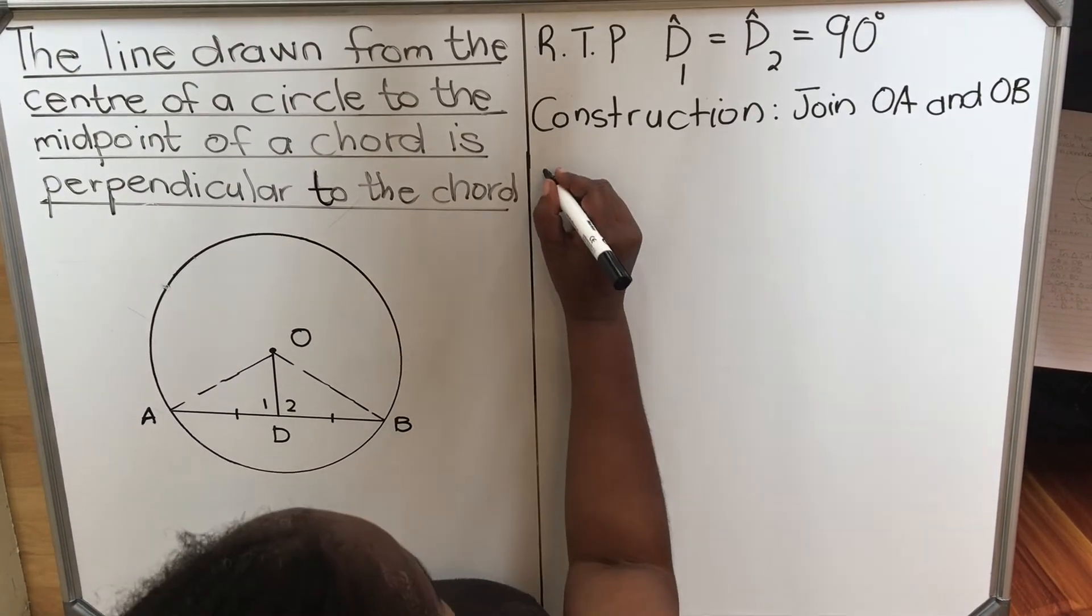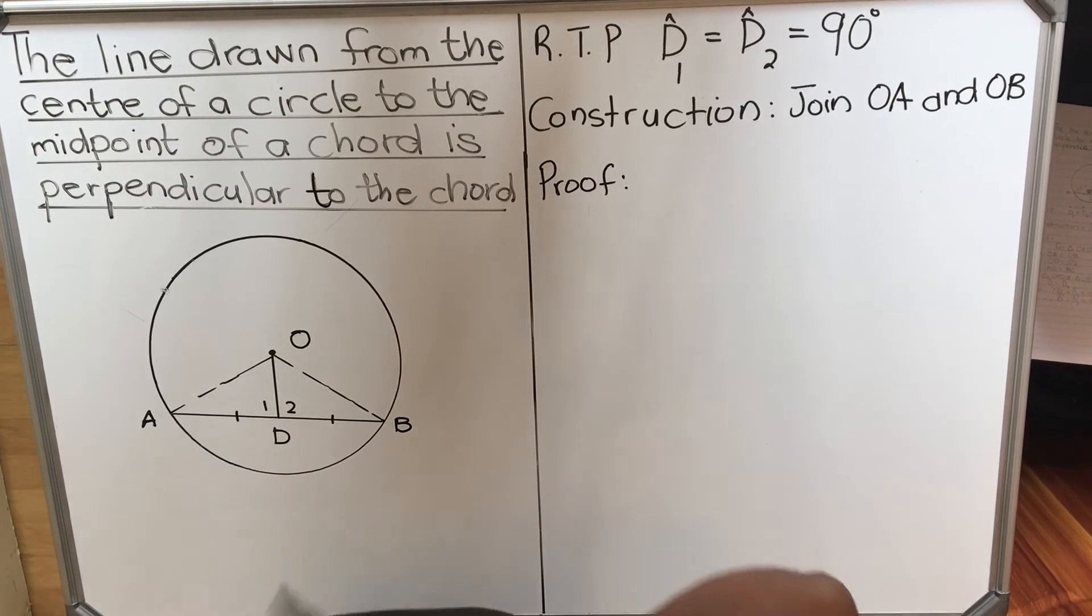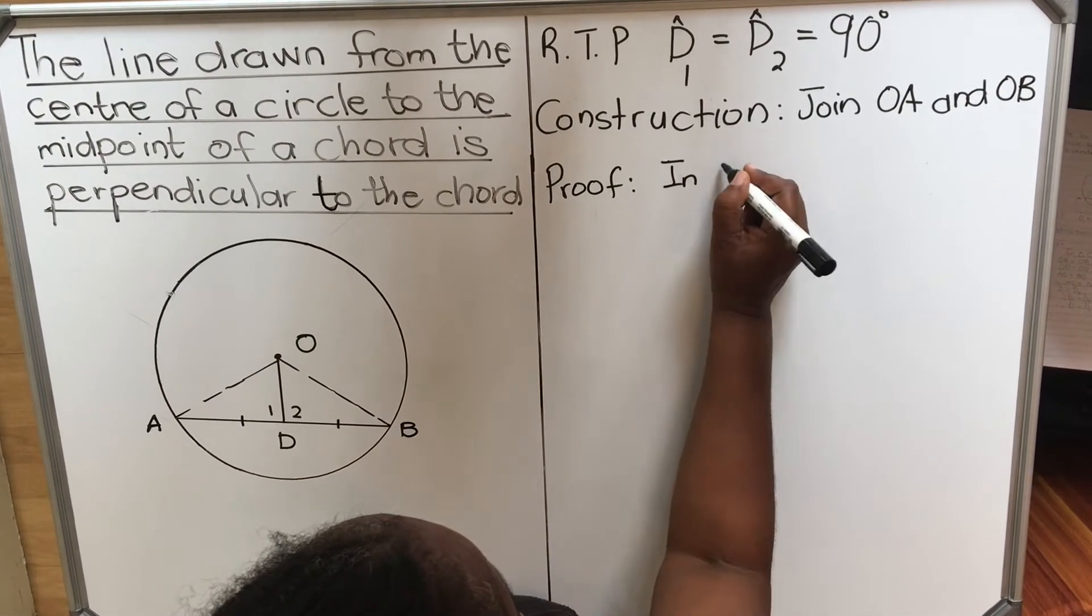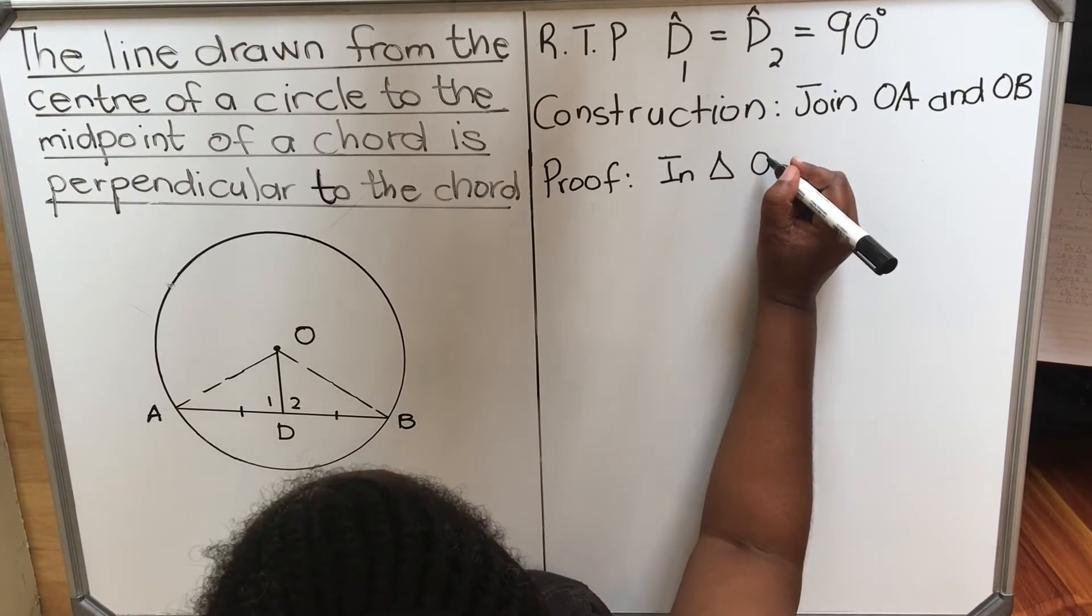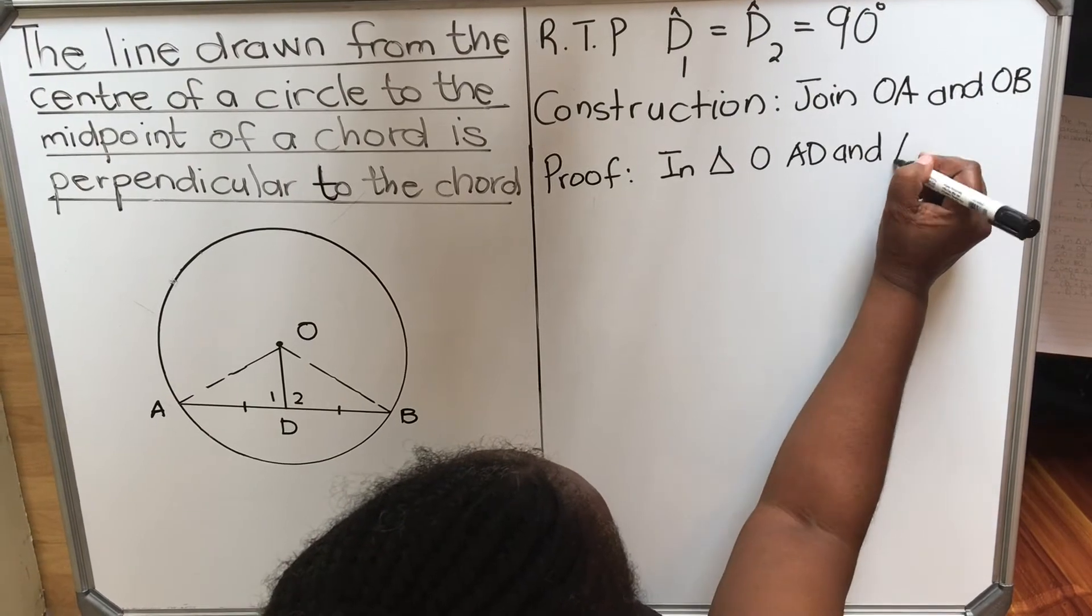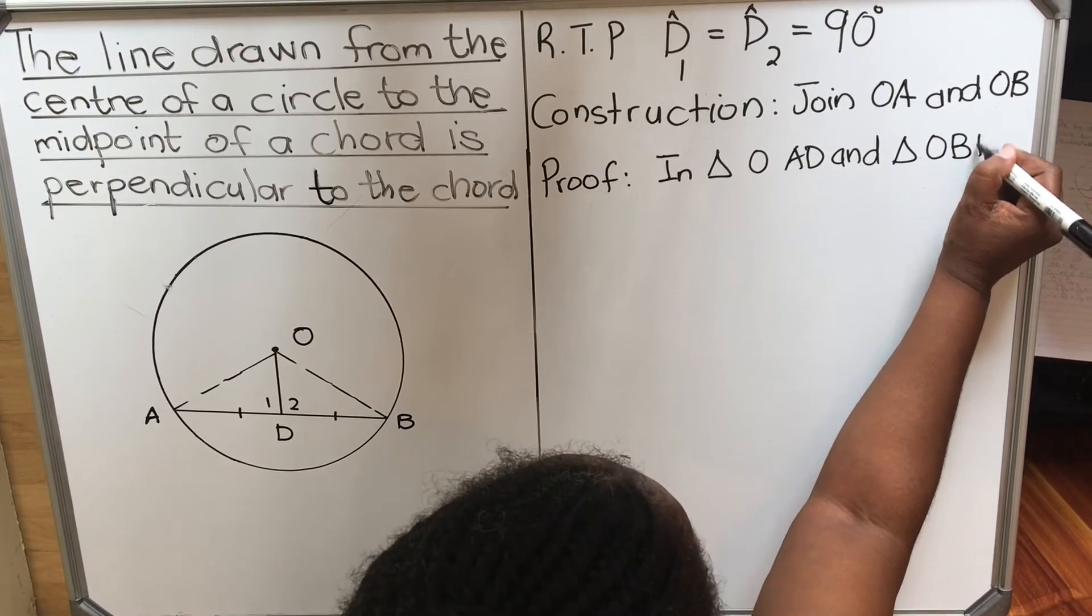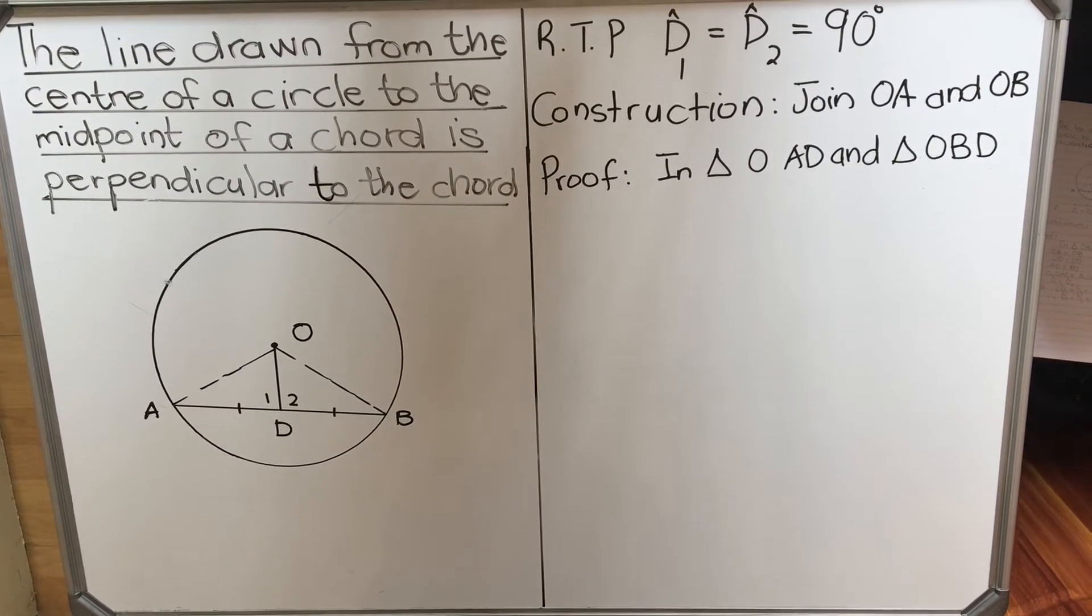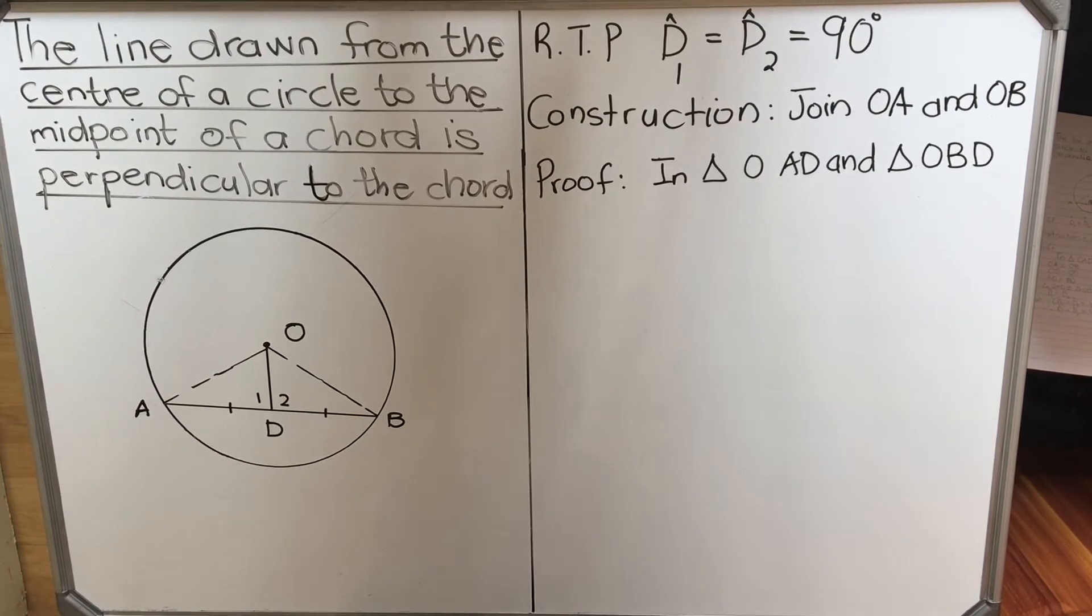And then your proof. For this proof you are going to use congruency. So you're going to say, in triangle like you are in grade 9, OAD and triangle OBD. And then you're going to find either three sides that are equal, or a side and included angle and a side. Let's see how we're going to do this one.